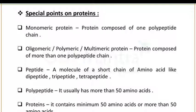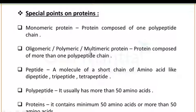Some special points related to proteins: proteins composed of only one polypeptide chain are known as monomeric proteins. Proteins composed of more than one polypeptide chain are known as oligomeric, polymeric, or multimeric proteins. A peptide is a molecule with a short chain of amino acids — like dipeptide, tripeptide, and tetrapeptide. A polypeptide usually has more than 50 amino acids, while a protein should minimally have 50 amino acids or more.